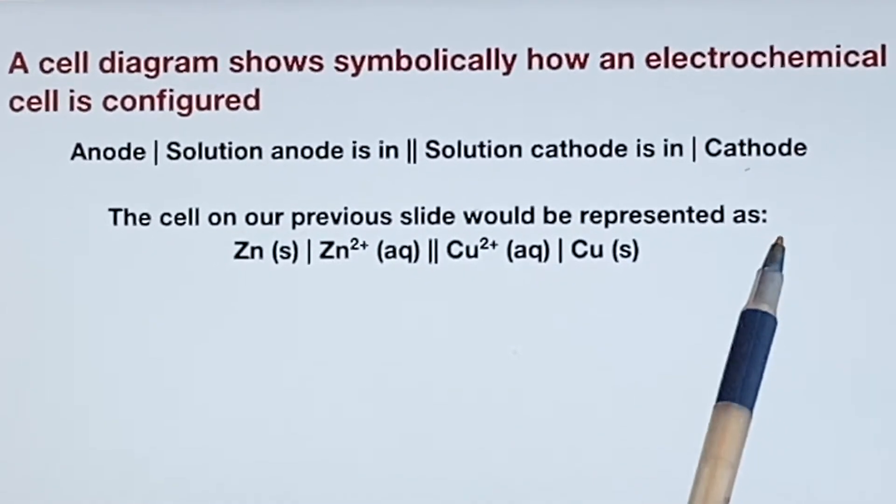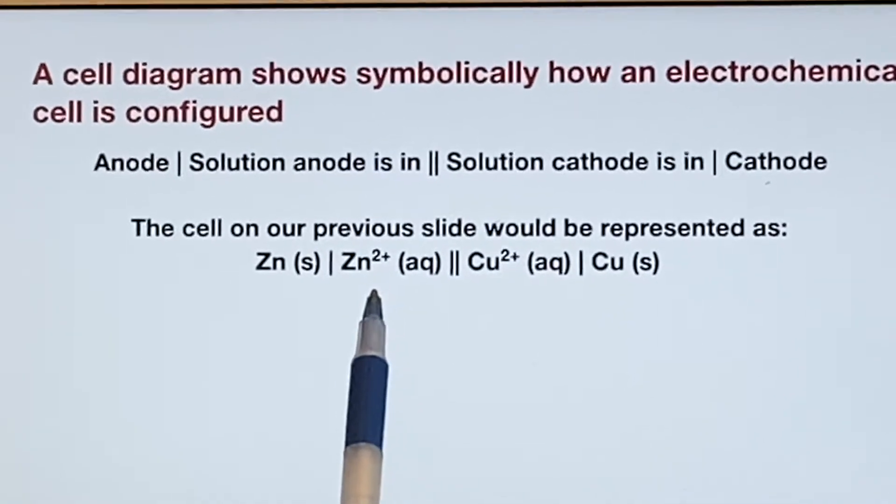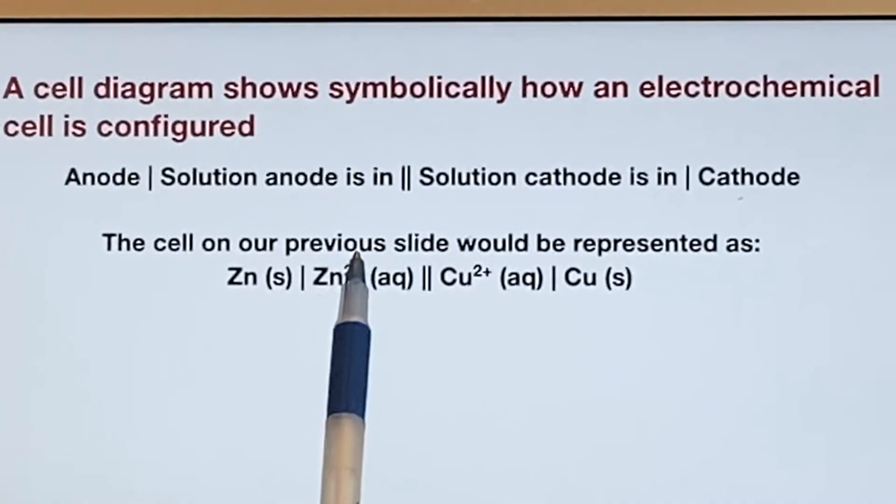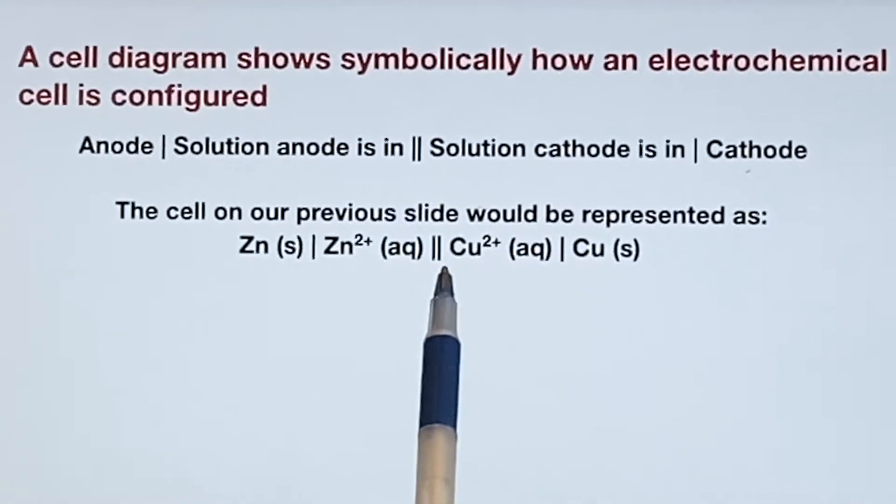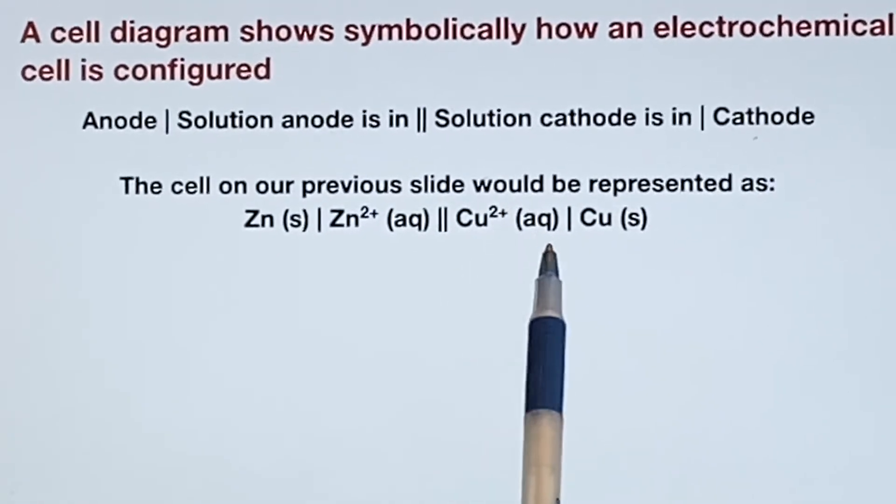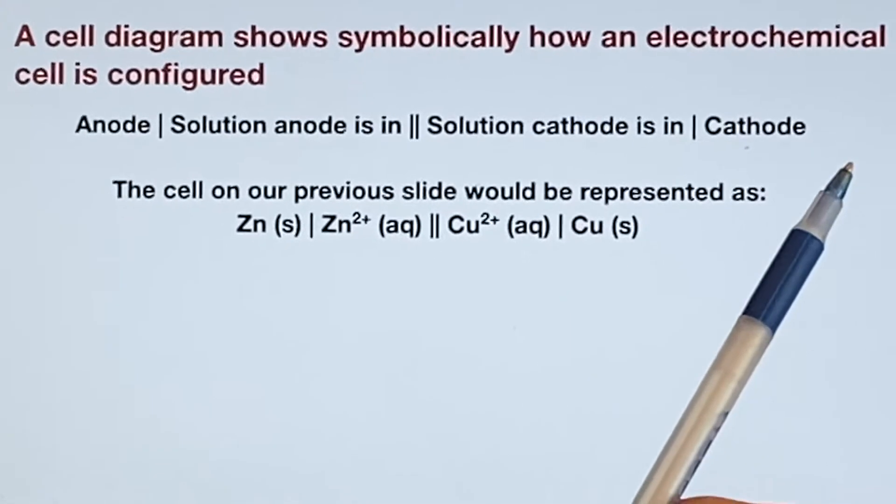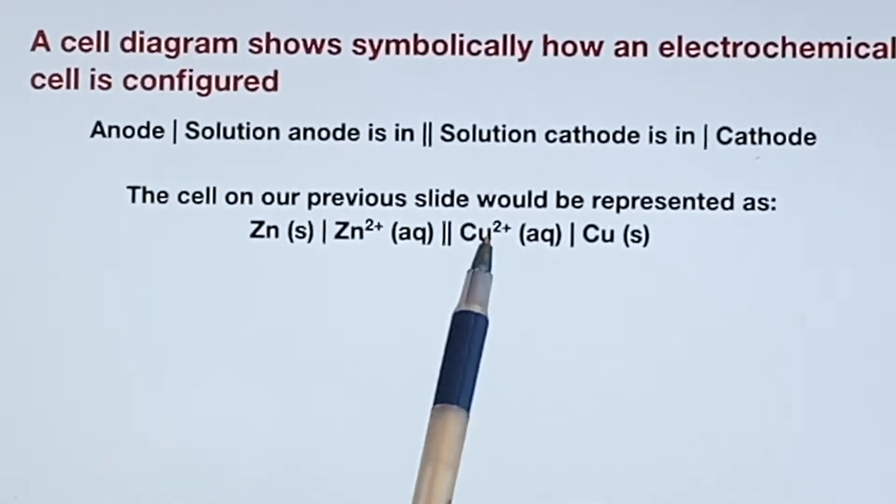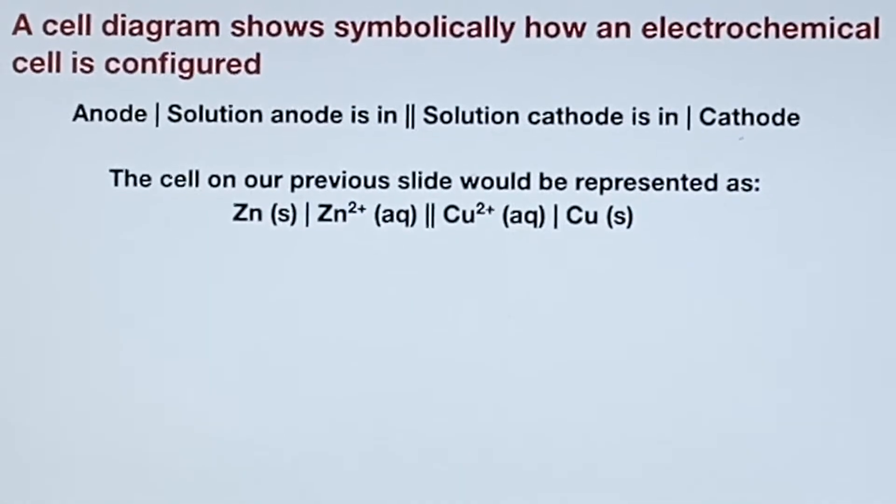On our previous slide, we would represent it as the zinc was the anode. This was the solution that it was in. We don't bother with the spectator ions. We just mention that the zinc is aqueous in a plus two oxidation state. And then on the other side is the copper as an ion in an aqueous state, and the solid cathode. So anode to cathode. Anode where oxidation happens, numbers going up. Cathode where reduction happens, numbers going down. And you can see that sort of just flows left to right to try to make that easier.